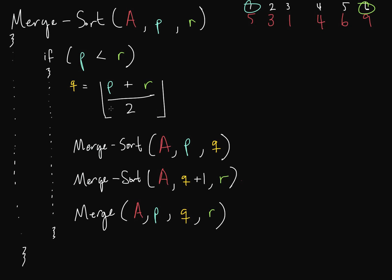Now we need to find a Q value. To calculate Q, it's floor of (P + R) / 2. So 1 plus 6 is 7, divided by 2 is 3.5, floored to 3. Our Q value is 3. Now we make a recursive call to merge sort from P to Q — this is the divide part of divide and conquer.